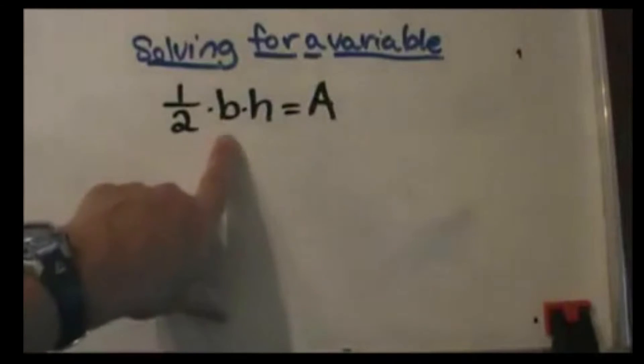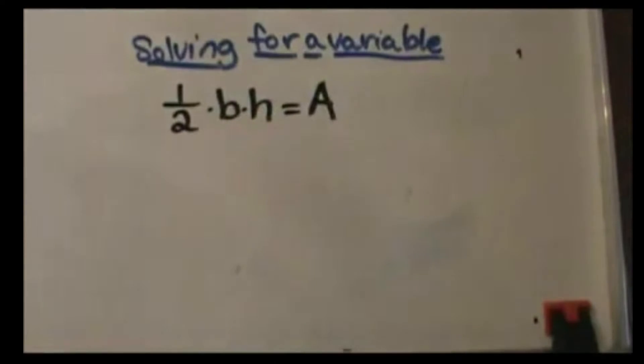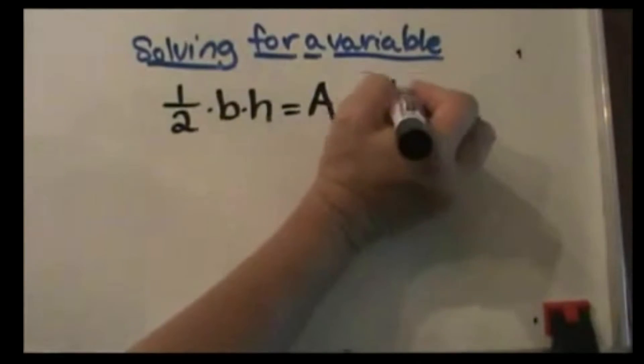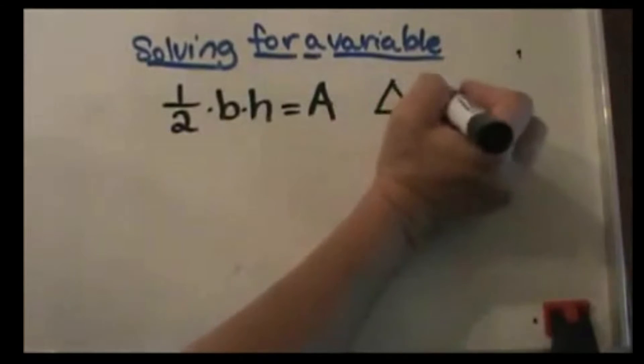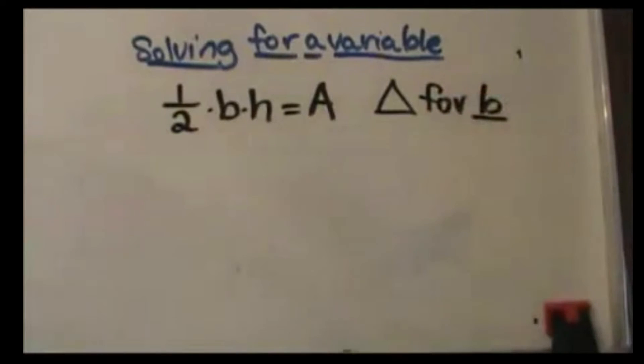We have one half base times height equals area, and hopefully you recognize this as the area of a triangle. We're going to solve for b, or solve for the base.